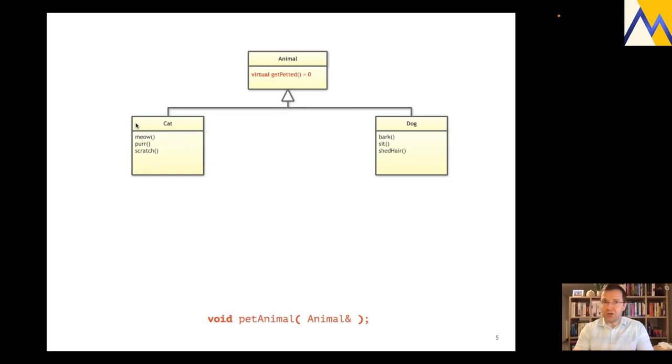And so the first idea probably most of you have at this point is, of course, to introduce an abstraction in form of a base class, an animal base class. And along with it, we introduce getPetted. So the animal is now able to get petted. Not yet, not really, because this is a pure virtual function. It needs to be implemented in both cat and dog. And so this is what we do. We implement getPetted in the cat class and in the dog class. Great. Now we can pet both cats and dogs.